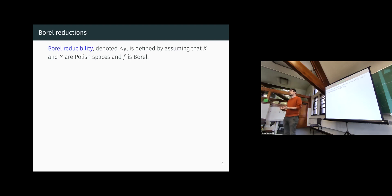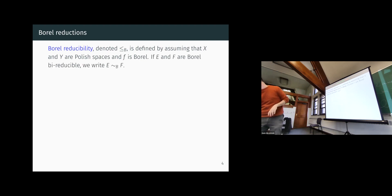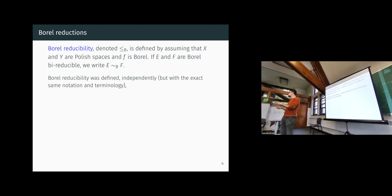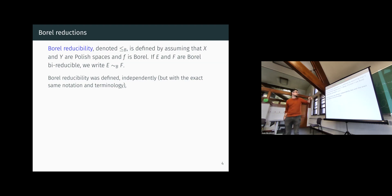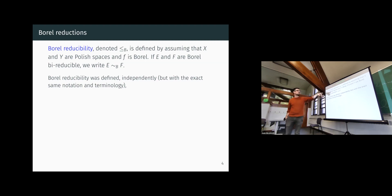You have two main options. The first is the descriptive set theory option: you assume that X and Y are Polish spaces and f is Borel. From that you get a notion of Borel reducibility, and of course you also want the corresponding notion of degrees — two things being bi-reducible. Let me go quickly through the history.